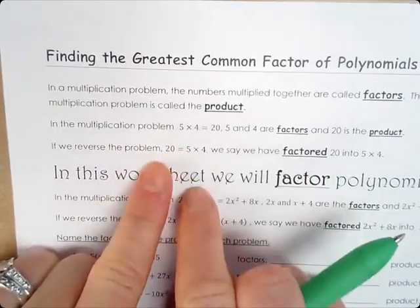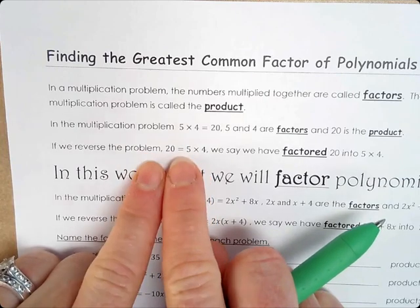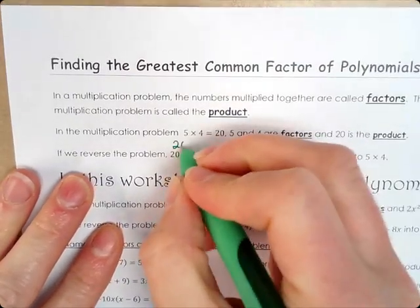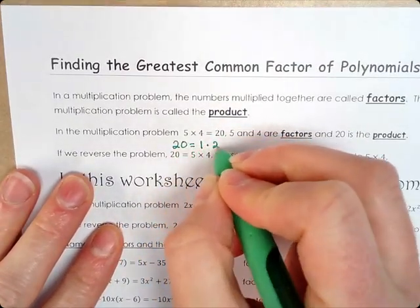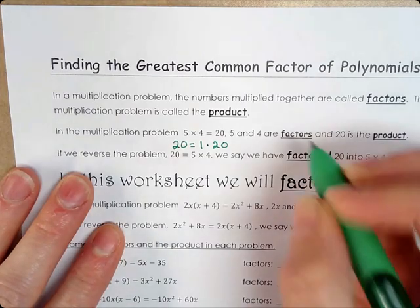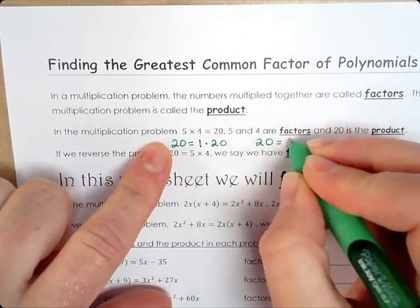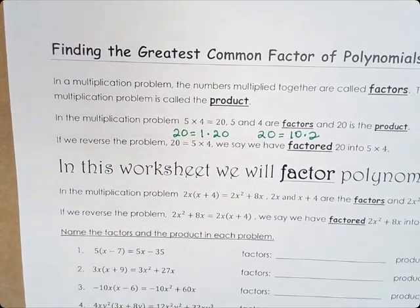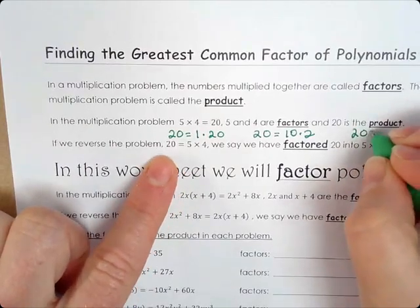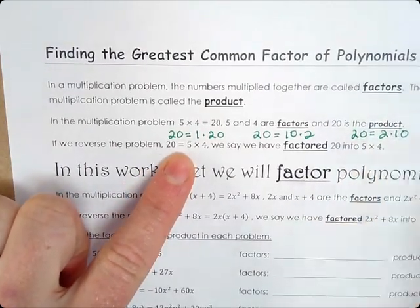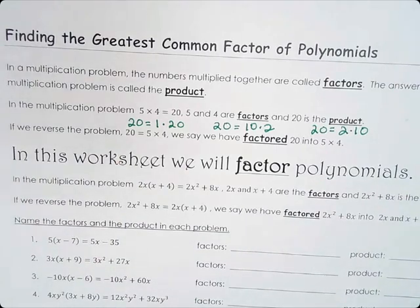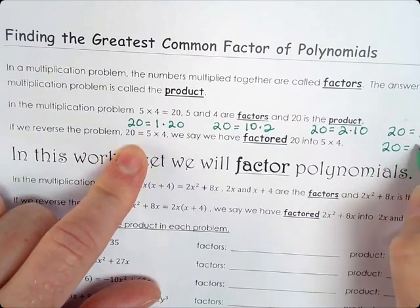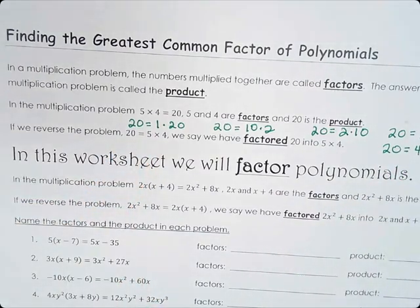So we flip it around and that would be called factoring — we write out what are the factors of 20. We can write 20 multiple ways: 1 times 20, or 10 times 2. You could also say it in reverse: 2 times 10, or 20 times 1, or 4 times 5. So there are different ways to write those factors.